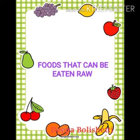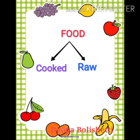Dear students, now we will see foods that can be eaten raw. Some foods can be eaten only when cooked. We cook most of our food before we eat it. Cooking makes our food tasty and easy to eat. For example, rice, wheat, and upma. Some foods can be eaten raw.